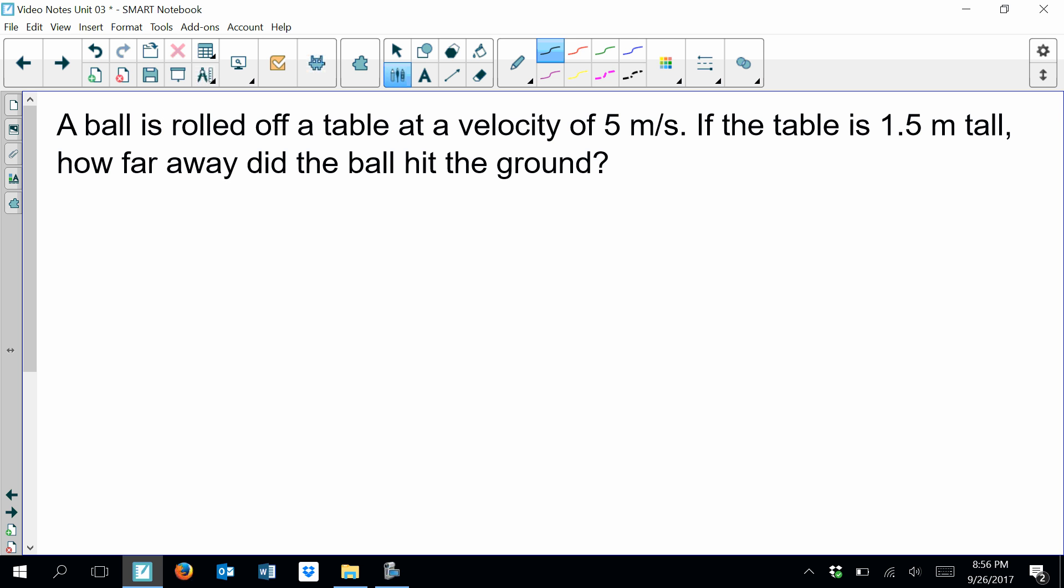For instance, we've got this ball that is rolled off a table with a velocity of 5 meters per second. If the table is 1.5 meters tall, how far away did the ball hit the ground? So I first like to just draw a little diagram.